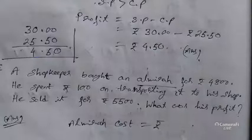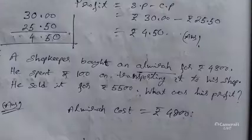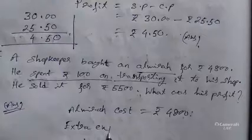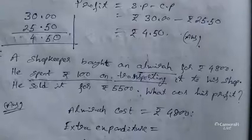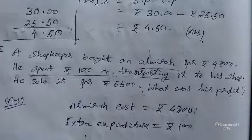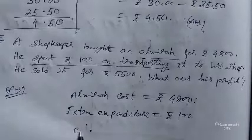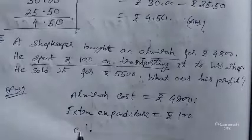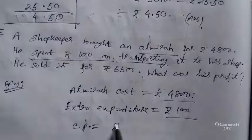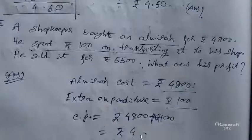But he spent an extra rupees 100 for transporting — this is an extra expenditure. So the shopkeeper is giving 4,800 and also 100 to get the almira. Therefore the actual cost price is rupees 4,800 plus rupees 100 extra. Adding, we get rupees 4,900. This is the CP of the almira.